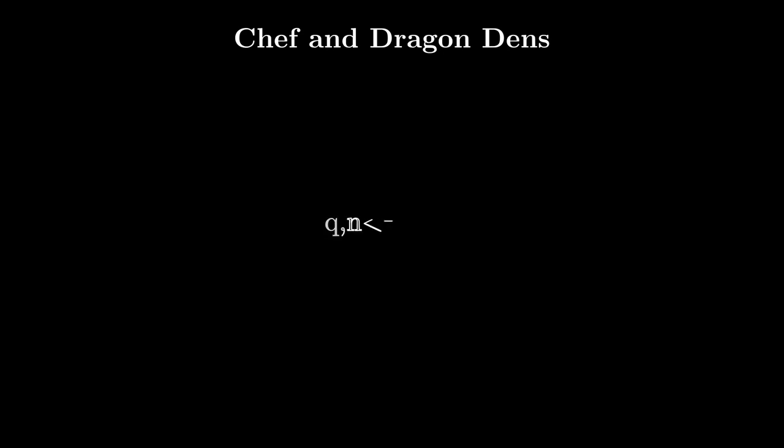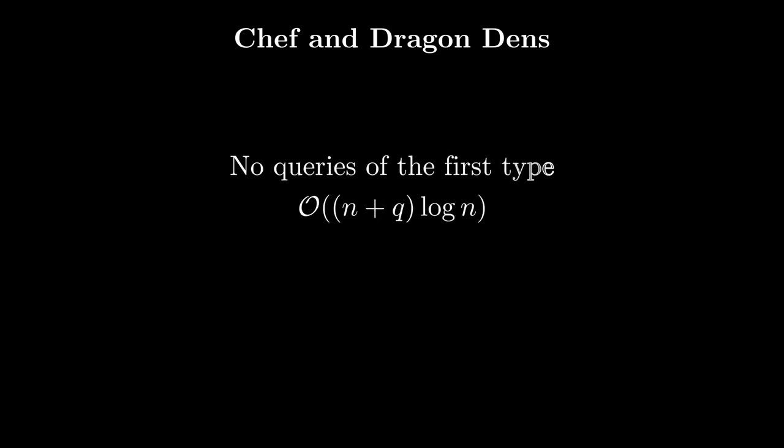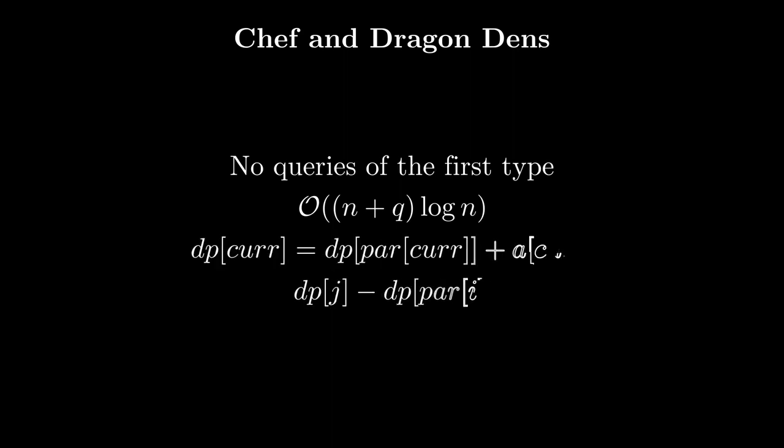Before explaining the implementation, I'll briefly cover the subtasks. Subtask 1 has q, n ≤ 1000, solvable in O(qn) by starting from the endpoint of a journey for each query and scanning leftwards for the next point with a greater height repeatedly until we reach the start node, then doing the same rightwards. Subtask 2 has no type-1 queries, so there are no updates. After building our trees we don't need segment trees — instead we calculate dp[node] = dp[parent(node)] + a[node], and the answer for all queries is dp[j] - dp[parent(i)]. This is still O(q + n log n) due to binary lifting.